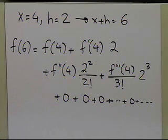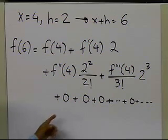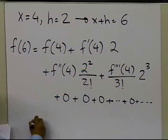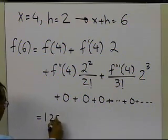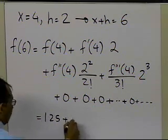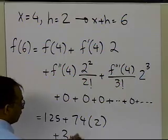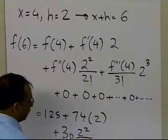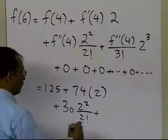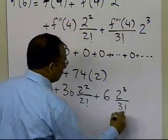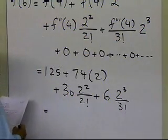This value of the function at 6 will be an exact value — there is no approximation involved — because all the derivatives are given to me, and the derivatives after the third are all 0. So f(4) was given as 125, plus f prime of 4 given as 74, plus f double prime of 4 given as 30, plus f triple prime of 4 given as 6, and this value turns out to be 341.